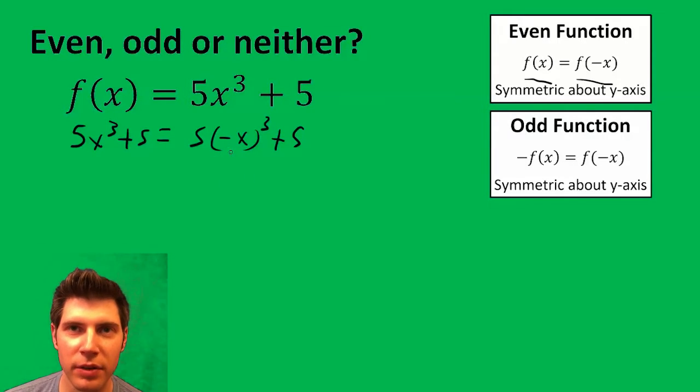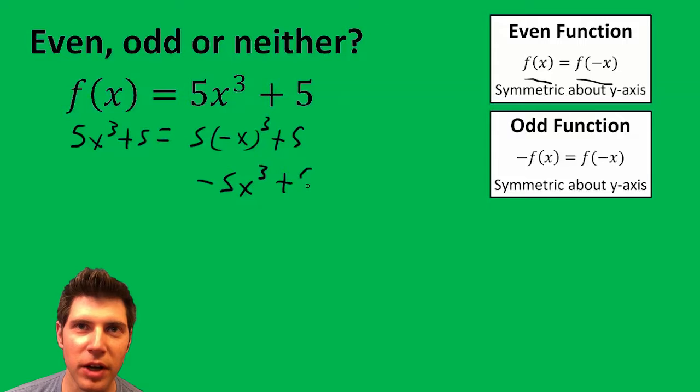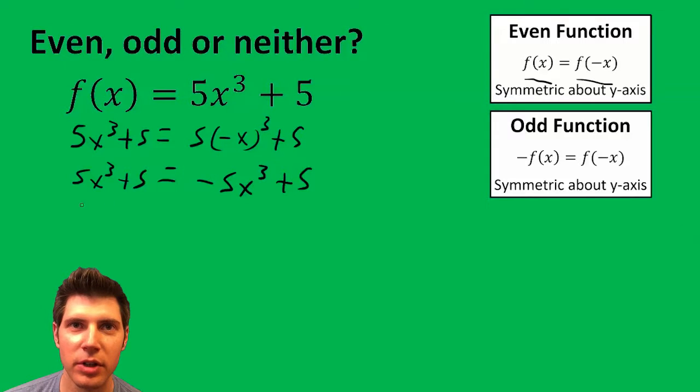After we do (-x) times (-x) times (-x), we get -5x³ + 5 for f(-x), compared to 5x³ + 5 for f(x). Because the exponent was odd, negative times negative times negative is still negative. So this does not work. It's not even.